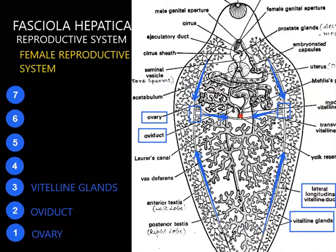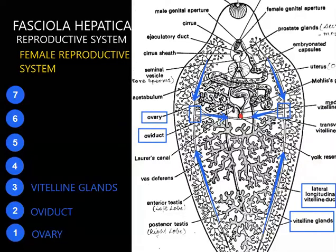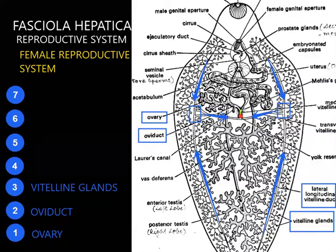The yolk reservoir, demarcated in red, stores all the yolk produced in the vitelline glands. Posteriorly the yolk comes toward the middle; from the anterior side it comes downward through the lateral longitudinal canals, forming transverse ducts and then stored in the yolk reservoir in the center. From this yolk reservoir, a duct comes out going upward — shown in green — called the median vitelline duct.